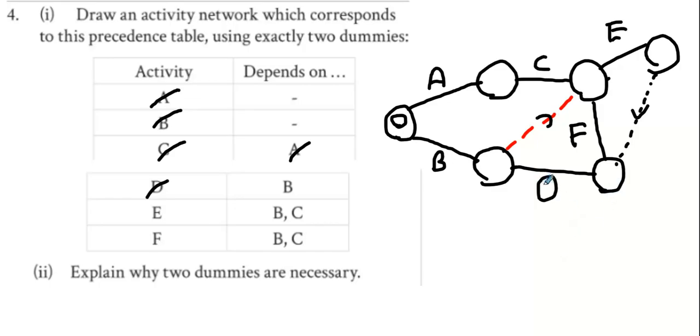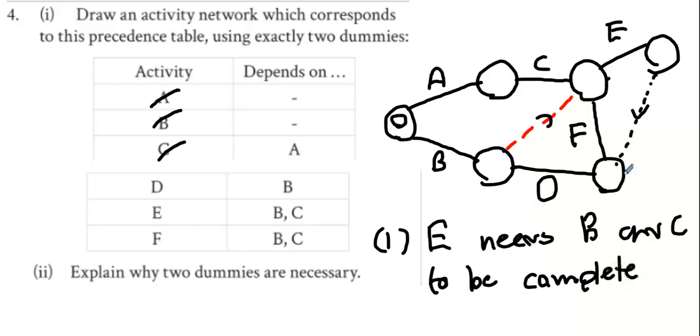Now dummy one, what's the first dummy? What is it that D depends on? F depends on... sorry guys, it's E and F. So what's the explanation for the first red line? E needs B and C to be complete. That's the explanation for dummy line one, the red one.